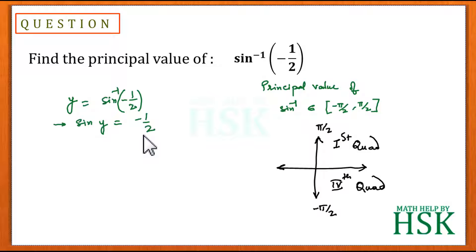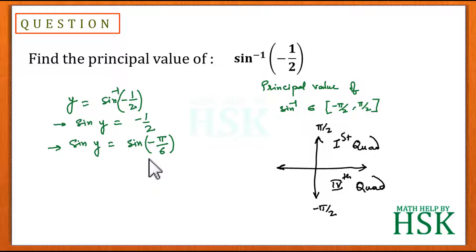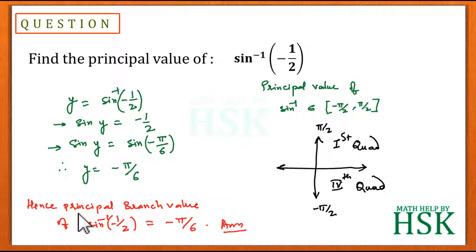From our knowledge of trigonometric ratios, we can see that sine of minus 30 degrees, or sine of minus pi by 6, equals minus 1 by 2. So we write sine y equals sine of minus pi by 6, which gives y equals minus pi by 6. Hence the principal value of sine inverse of minus 1 by 2 is equal to minus pi by 6, which is the required answer.